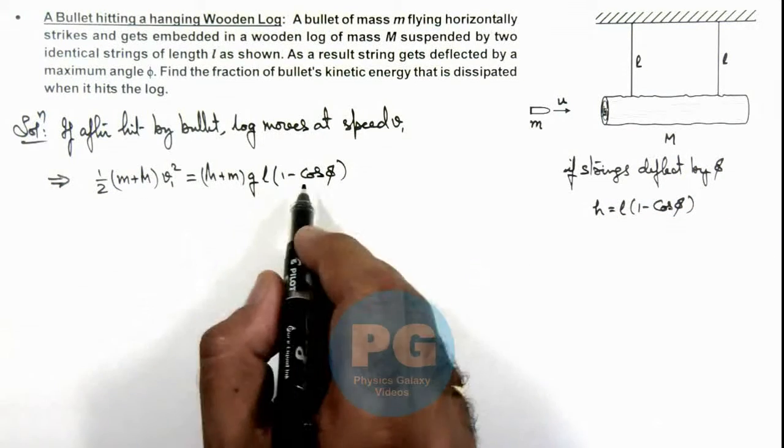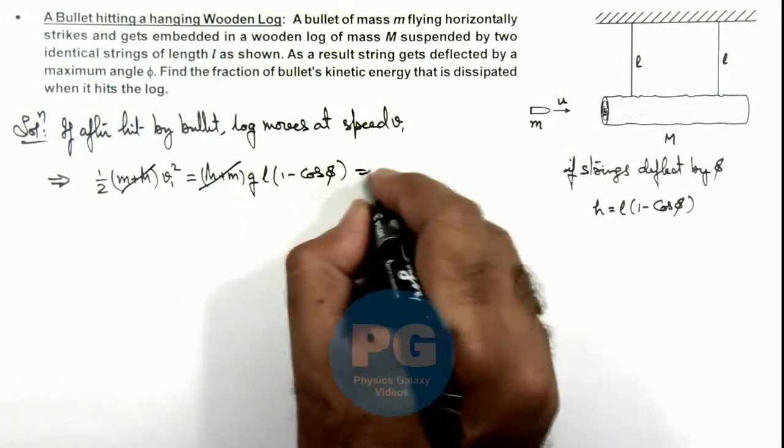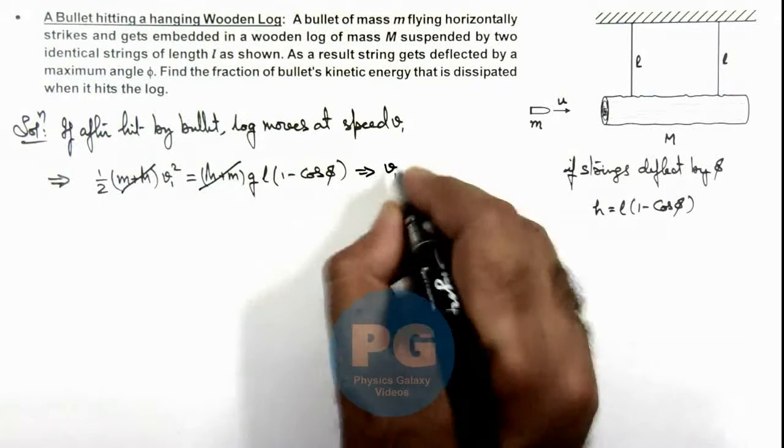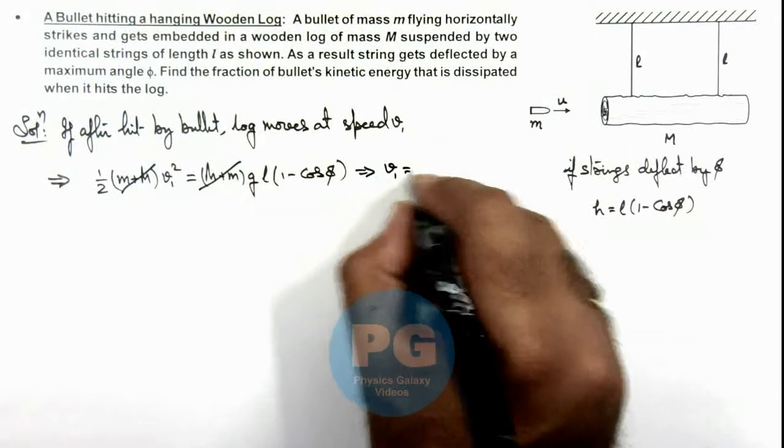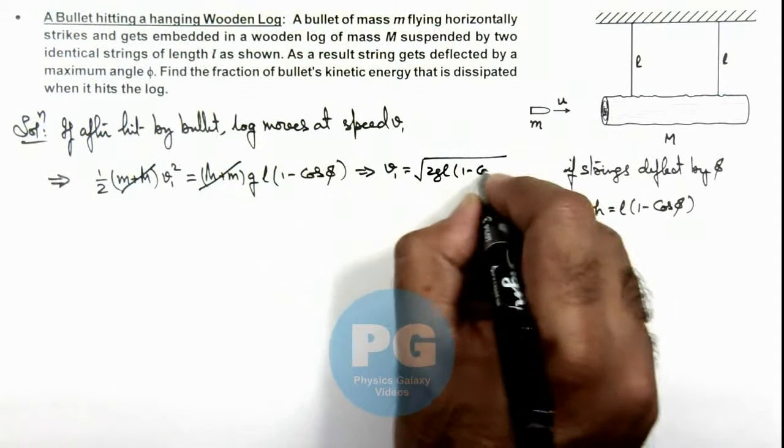So here this gives us, the (m + M) gets cancelled out, and this gives us the value of speed after hit by the bullet, which is the root of 2gl(1 - cos φ).